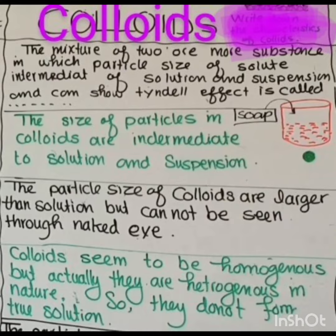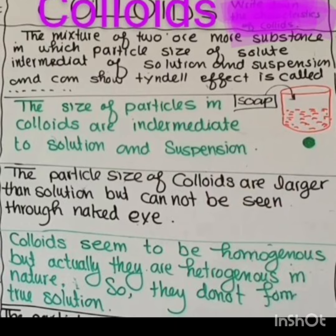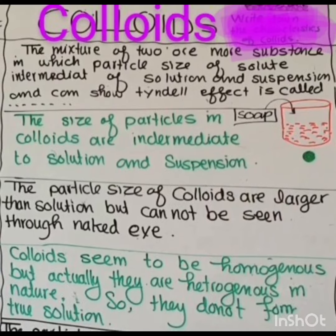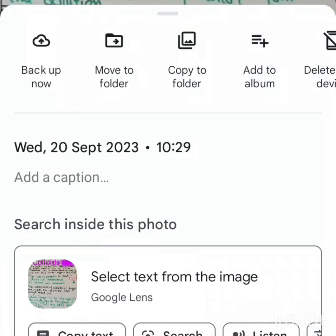A mixture where the particle size of the solute is intermediate between a solution and a suspension, and which can also show the Tyndall effect, is called a colloid. The size of particles in colloids is intermediate between a solution and a suspension. Colloids seem to be homogeneous but are actually heterogeneous in nature.